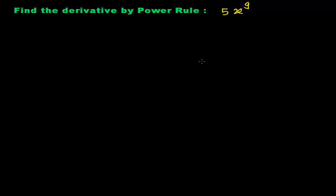Hello friends, in this video we're going to learn another method of finding derivatives — that is the power rule. We need to find out the derivative of the function 5 times x to the power 9 using the power rule. I've already introduced you to the power rule — what it is and how to find derivatives quickly using it. Let me review the power rule once more.